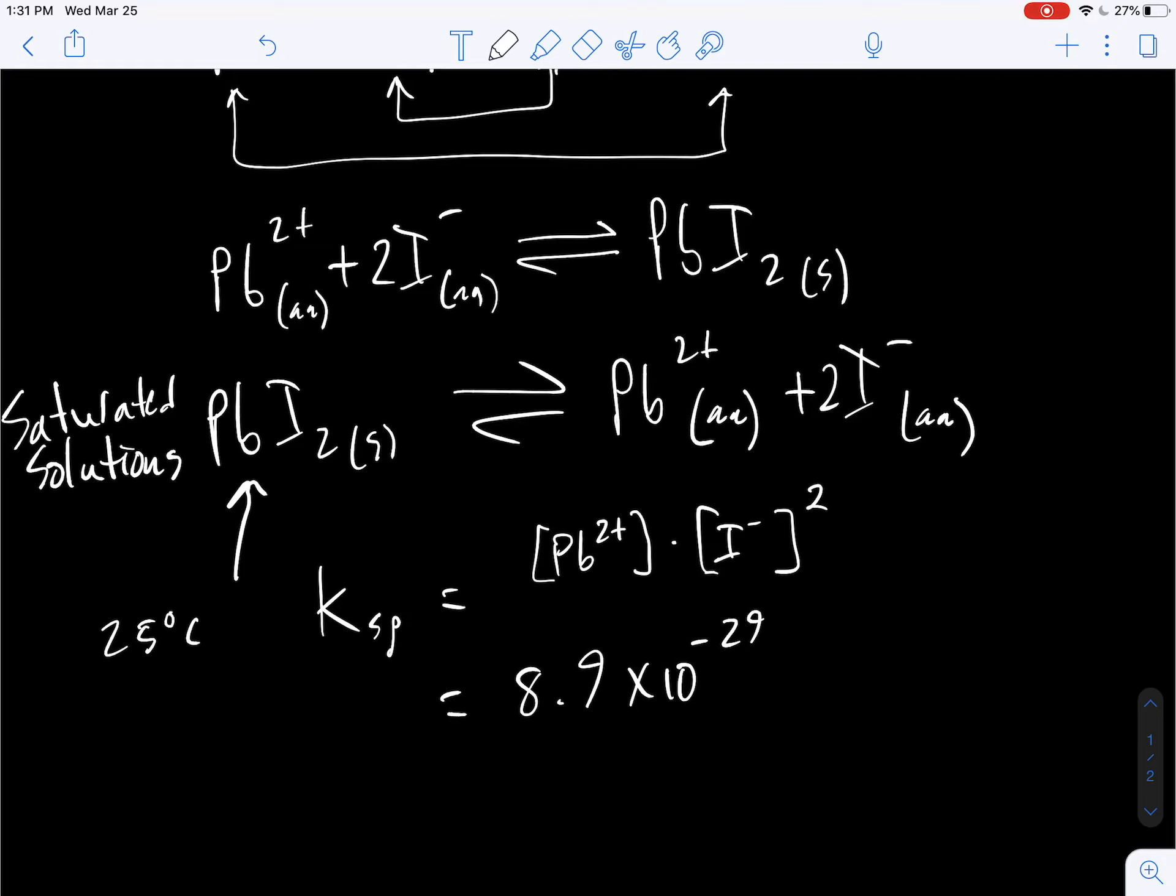What does that tell us? Well, that means when I put lead iodide into solution, what's favored? This side or this side? Well, the concentration of this times the concentration of these dissolved ions only equals this tiny, tiny number, as in barely anything is dissolved in solution.